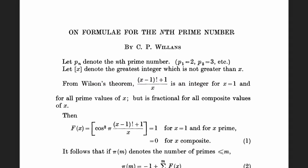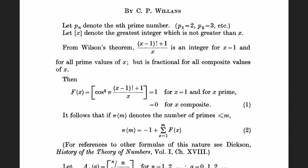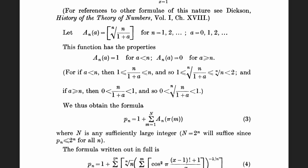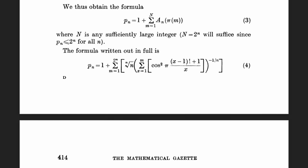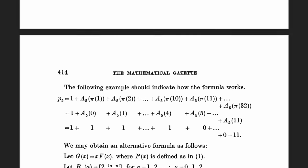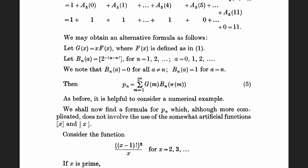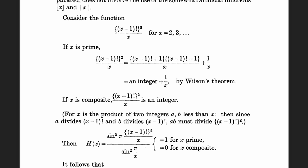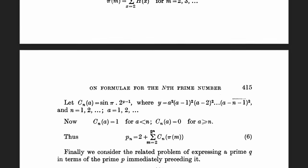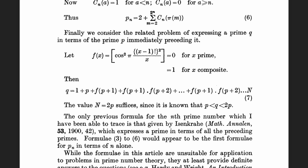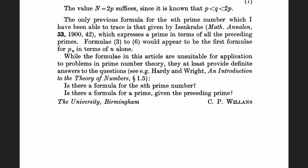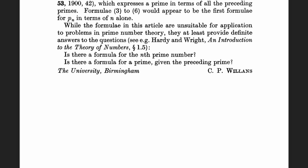By the way, essentially nothing seems to be known about C.P. Willans, which is a real shame. The formula appears in a three-page article called On Formulae for the nth prime number in the Mathematical Gazette. And yes, there are other formulas in the article that I didn't talk about in this video, so check it out if you're interested. But Willans has no other articles that I'm aware of. I don't even know Willans' first name. Could it be a pseudonym for someone who didn't want to tarnish their reputation by writing about useless prime-generating formulas? The article lists the University Birmingham for Willans' affiliation. If anyone can dig up more information, that would really be great.